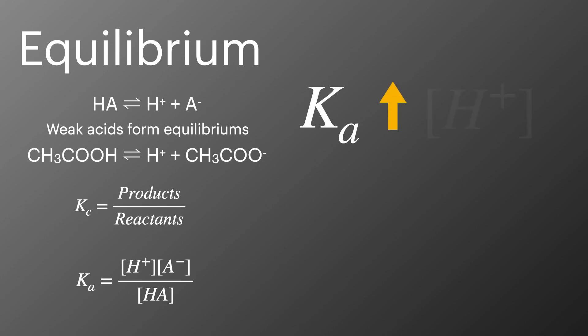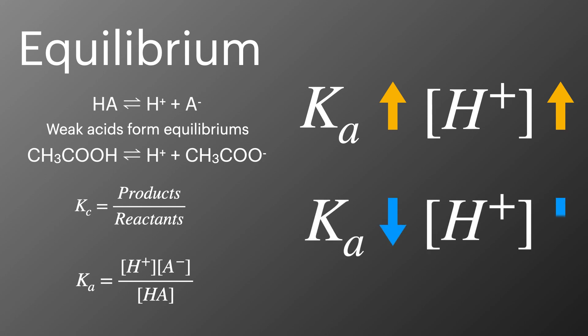If the value of Ka is higher then the equilibrium lies further towards the right. The acid is more dissociated and there is a greater concentration of hydrogen ions. If the value of Ka is lower then the equilibrium lies further to the left. The acid is less dissociated and the concentration of hydrogen ions is also lower.